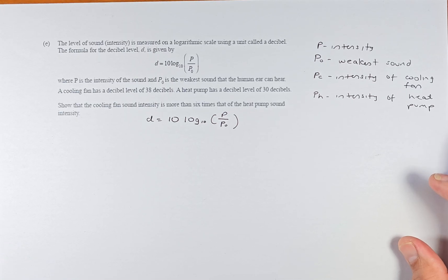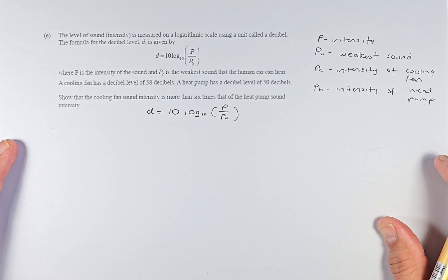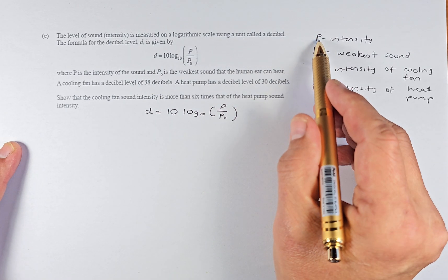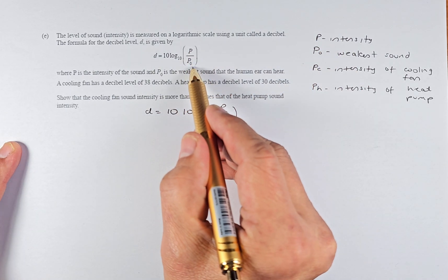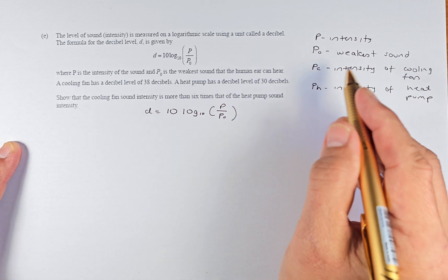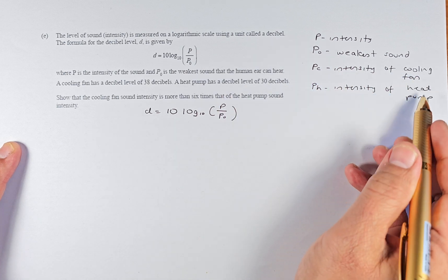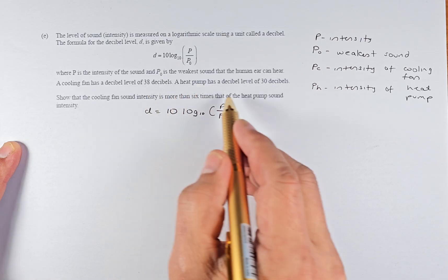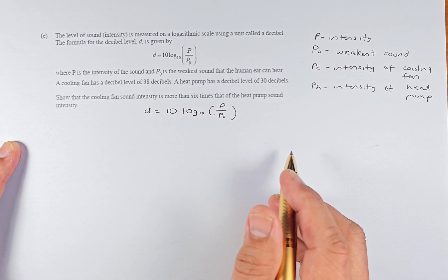Let's solve this problem. P is the intensity, P₀ is the weakest sound. We're going to represent Pc as the intensity of the cooling fan which equals 38, and Ph as the intensity of the heat pump which is 30 according to the question.